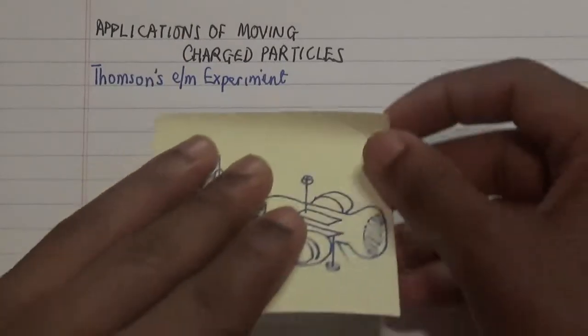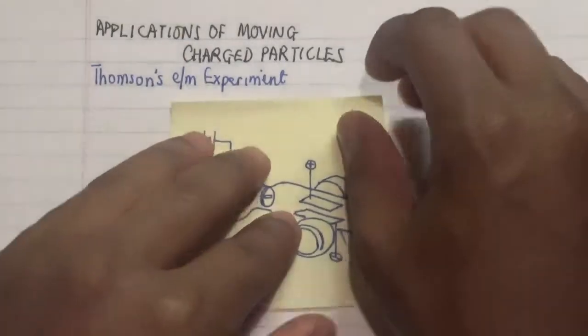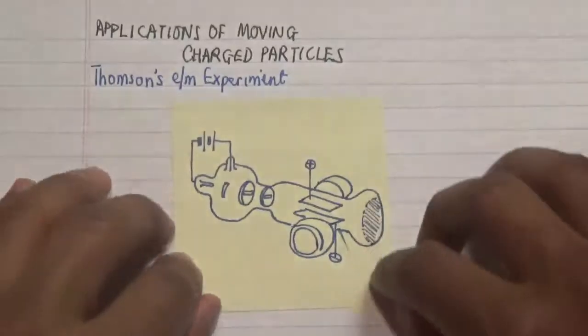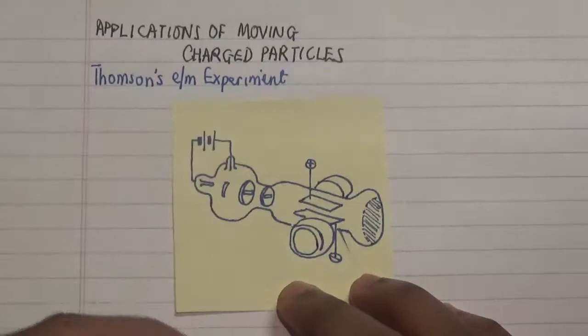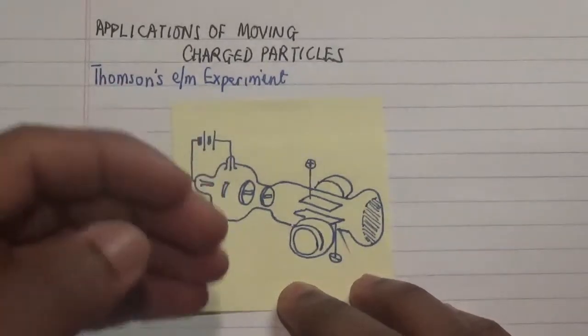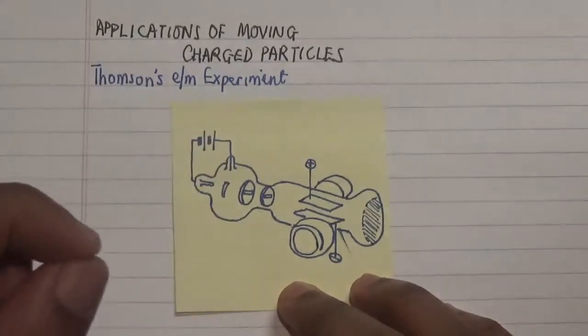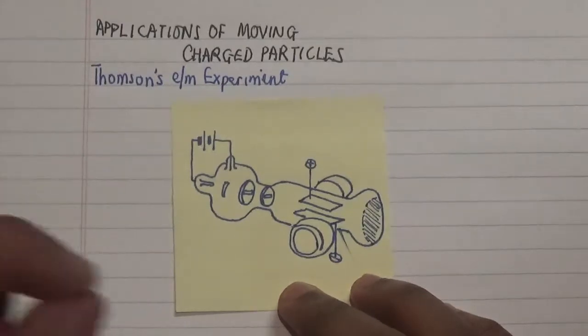So in here we have the experiment device. I'll say this is a skeleton of this particular instrument, and we'll label and at the same time describe how this is actually being used to determine the charge of an electron.